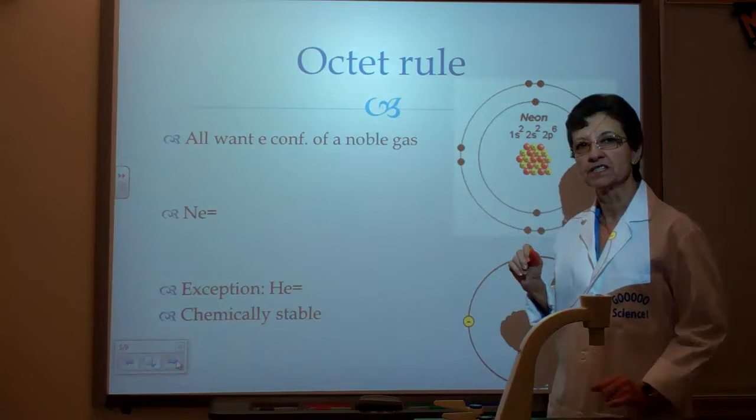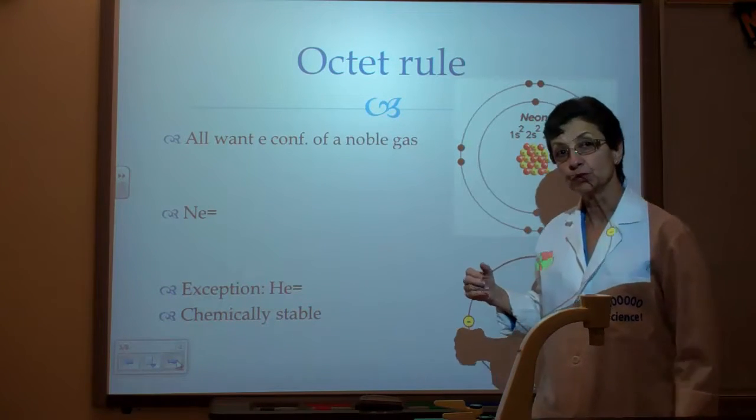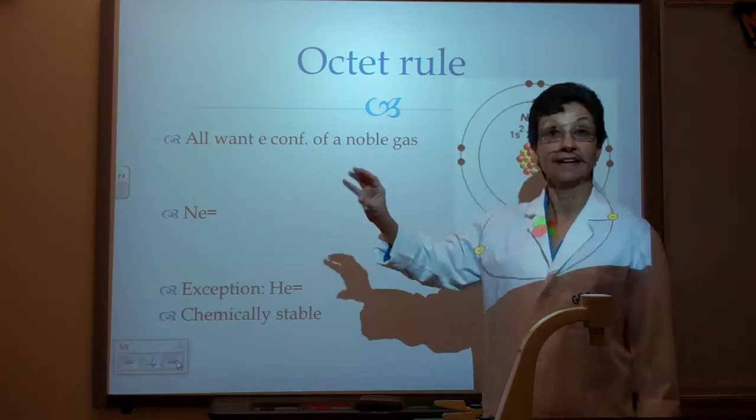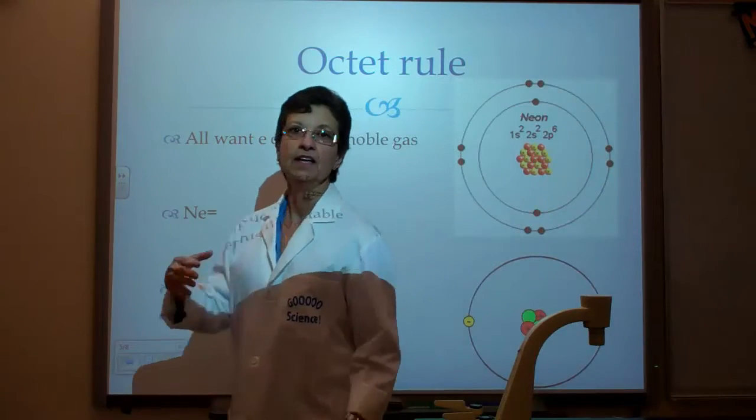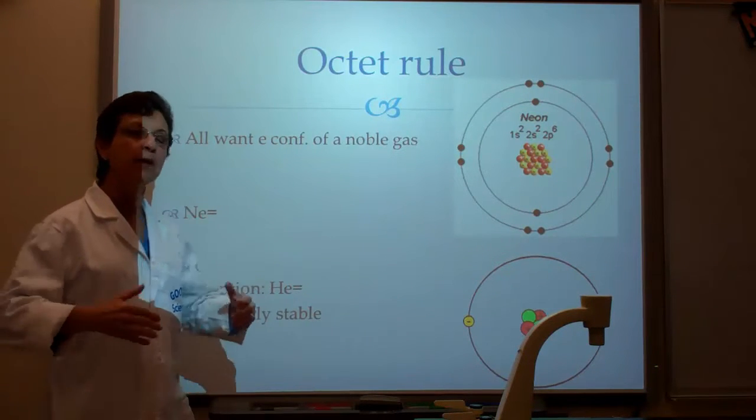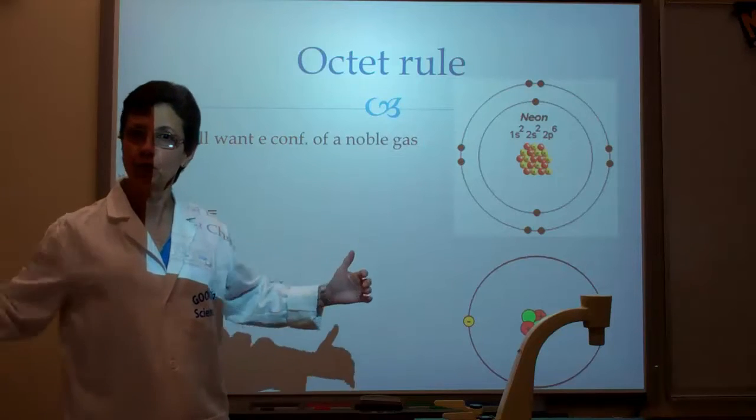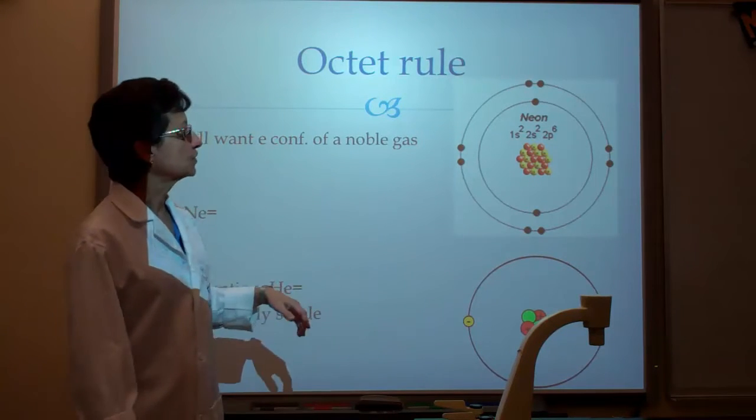Before we discuss that, we need to talk about the octet rule. The octet rule, sometimes called the octet-duet rule, has to do with atoms wanting a full outer shell. They want to appear cool to the world, meaning they have a full array of valence electrons.